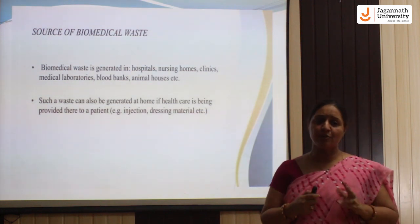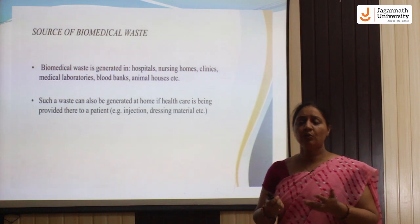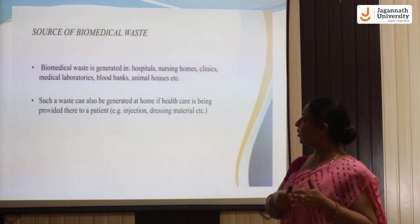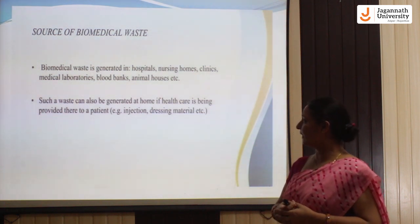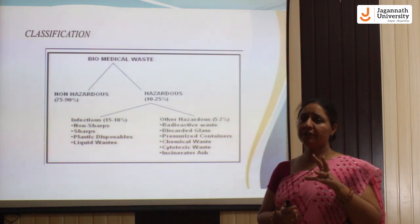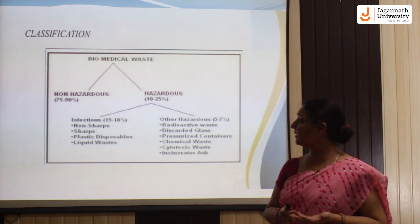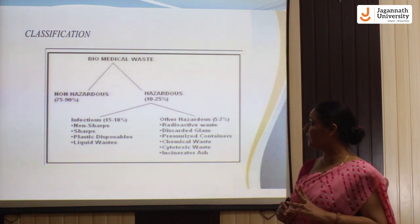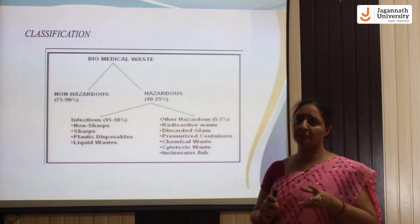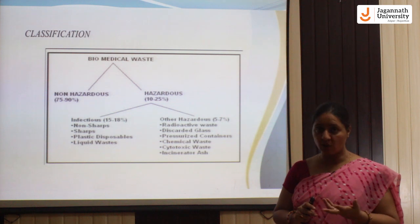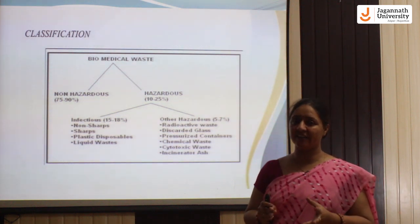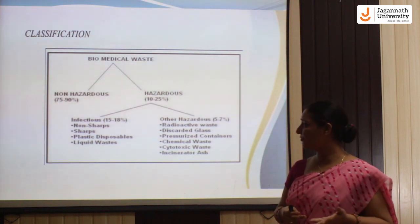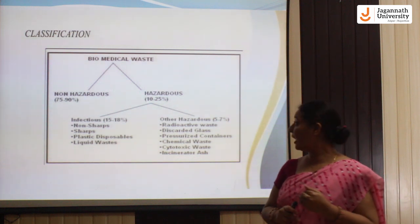These are the basic types of biomedical waste, releasing from various hospitals, nursing homes, medical laboratories, and blood banks. As per their hazardousness, we can classify this waste into two major categories: non-hazardous and hazardous. Hazardous waste is small in quantity but highly toxic. Non-hazardous waste volume is higher but not toxic. Hazardous waste is further categorized into infectious waste and other hazardous waste.